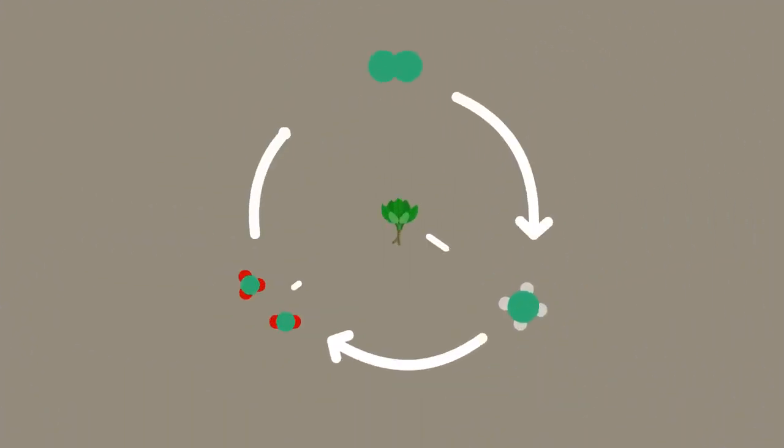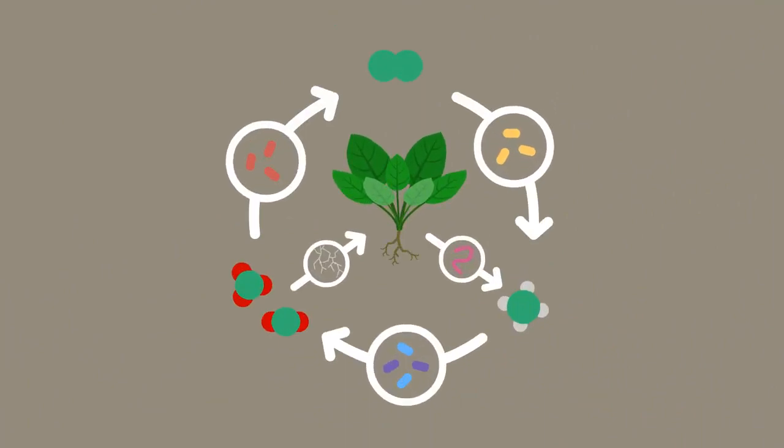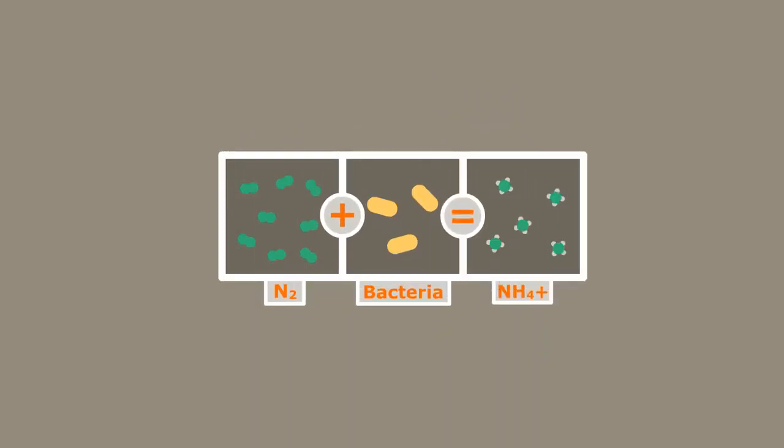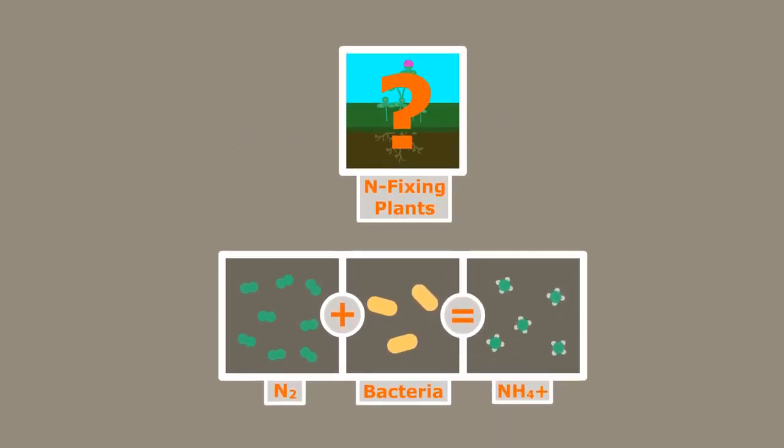Okay, so we know that the nitrogen cycle depends heavily on life in the soil. Without them, the plants would be quite sad. But you may have noticed, if the fixation process is done by bacteria, where do nitrogen-fixing plants fit into this?